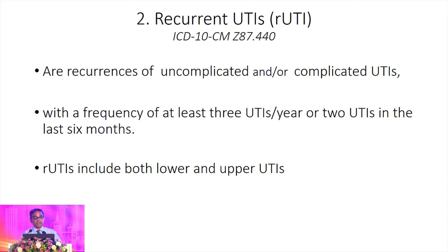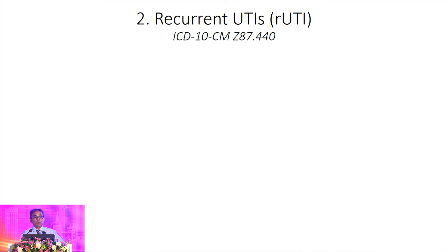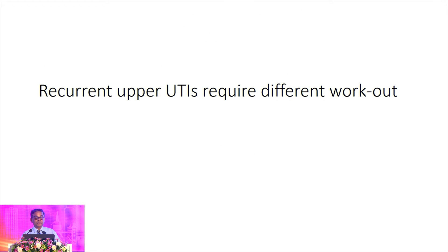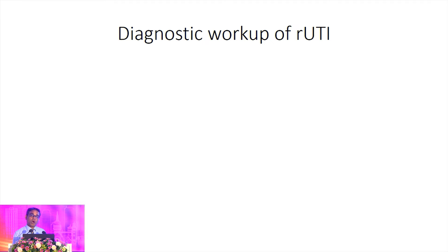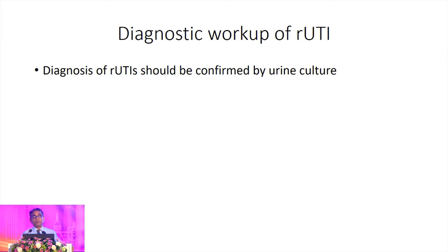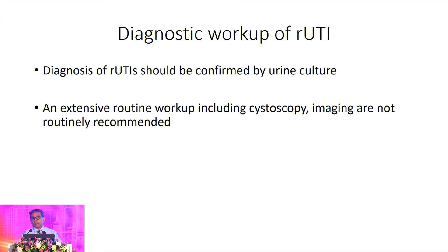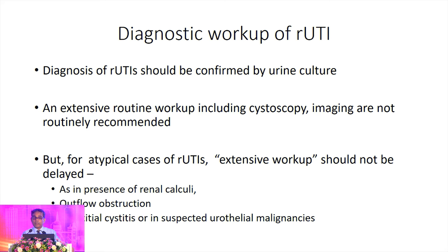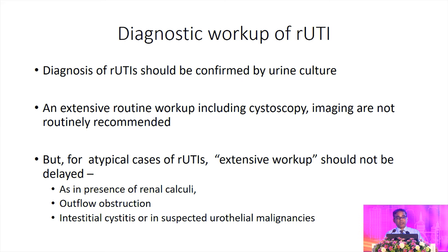You can get recurrent urinary tract infection in both the lower and upper urinary tract. How do we diagnose? As usual, we have to embark on culture, and there is no need for extensive workup like cystoscopy or imaging in patients presenting with recurrent lower urinary tract infections. But if you have any suspected atypical cases of recurrent UTI, you might have to engage in extensive workup — looking for renal calculi, outflow tract obstruction, interstitial cystitis, or suspected malignancies.